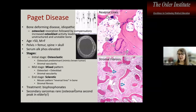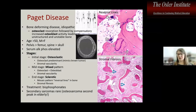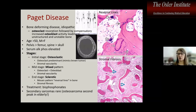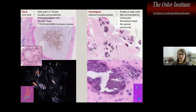Paget's disease puts elderly patients at risk for sarcoma development, specifically osteosarcoma. This triggers the third peak of osteosarcoma: in your teens you get osteosarcoma of long bones, in your 30s of jaw bones, and again in elderly age in long bones related to Paget's.